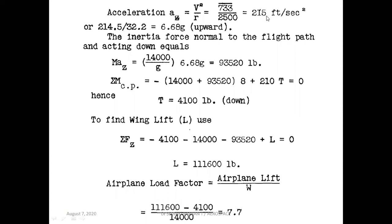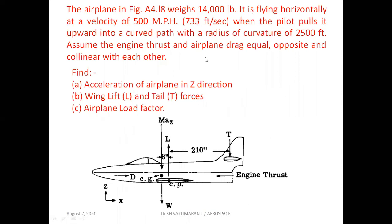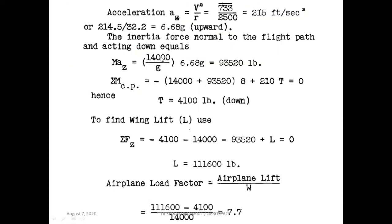Dividing 215 by 32.2 gives approximately 6.68G. The inertia force normal to the path, MA_z, equals W/G into the acceleration. W is 14,000 pounds and acceleration is 6.68G, so G cancels: 14,000 into 6.68 gives an inertia force of 93,520 pounds.